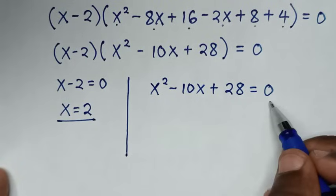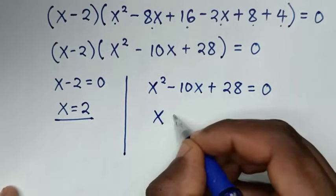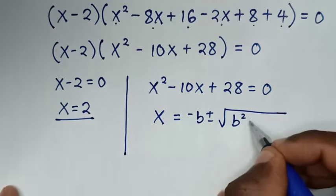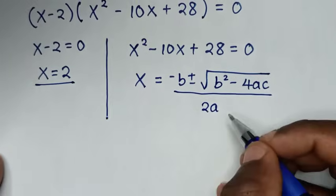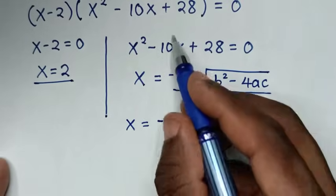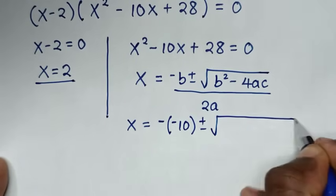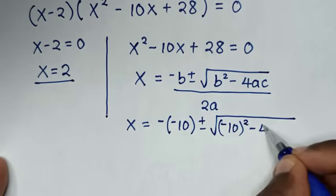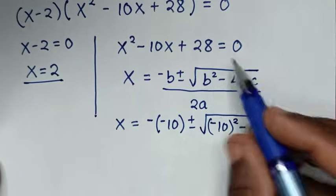To solve the quadratic equation we use the quadratic formula: x = (-b ± √(b² - 4ac)) / 2a. Here b = -10, a = 1, c = 28, so x = (-(-10) ± √((-10)² - 4·1·28)) / (2·1).